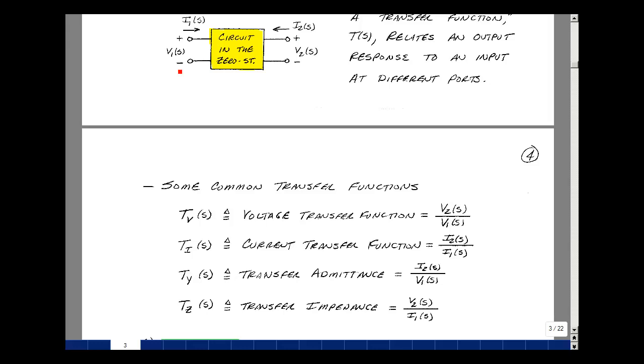We could talk about having a current out over a voltage in. That would have units of admittance, so we'll call that a transfer admittance, T_Y. And lastly, we could take a voltage out over a current in. That would have units of impedance, and we could refer to that as a transfer impedance, T_Z.